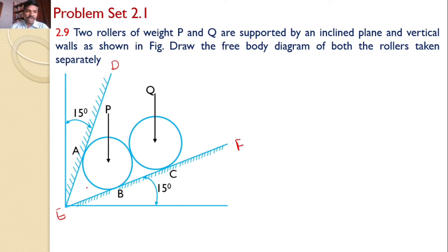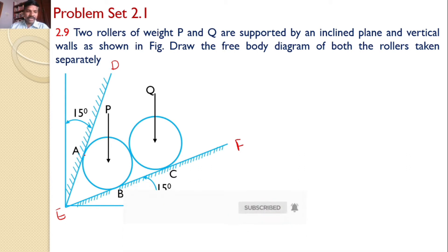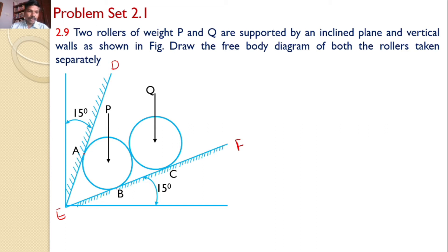First, let us consider roller P. The weight of roller P acts downwards — it is already indicated in the diagram. In addition to this, roller P is supported by the fixed wall at A and B, and also it is supported by another roller Q. So at all these places, reaction forces will develop. First, consider at point A — what is the reaction force? Since it is a fixed support, the reaction force will be perpendicular to the fixed support DE, at point A, and it is towards the roller P. This is the reaction Ra.